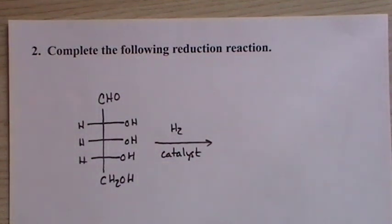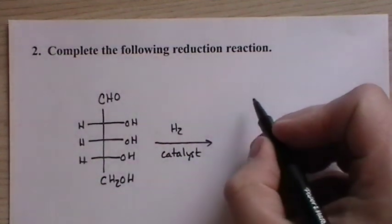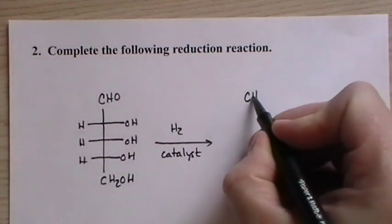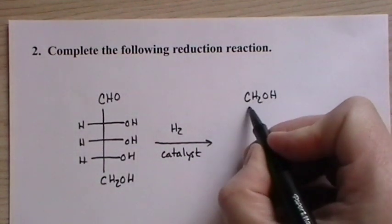Oxidation is either the addition of oxygen like we did or the removal of hydrogen, or reduction is either the addition of hydrogen or the loss of oxygen. In this case, we're going to add hydrogens to the aldehyde.